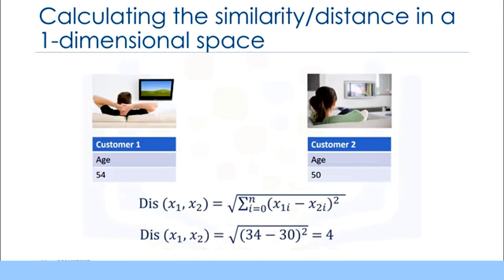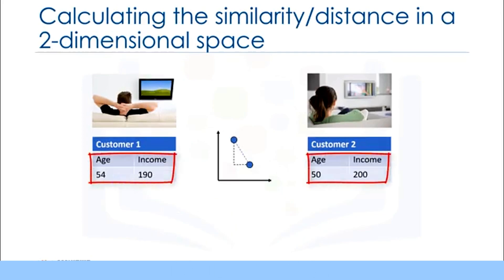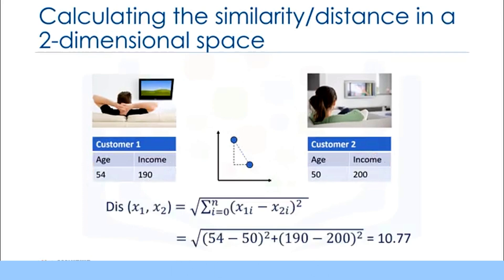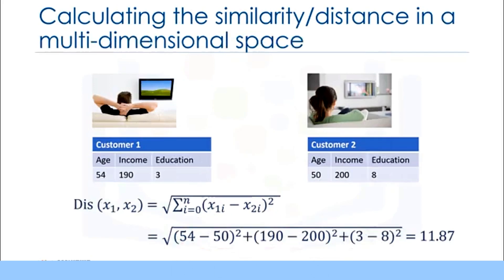What about if we have more than one feature, for example, age and income? If we have income and age for each customer, we can still use the same formula, but this time we're using it in a two-dimensional space.